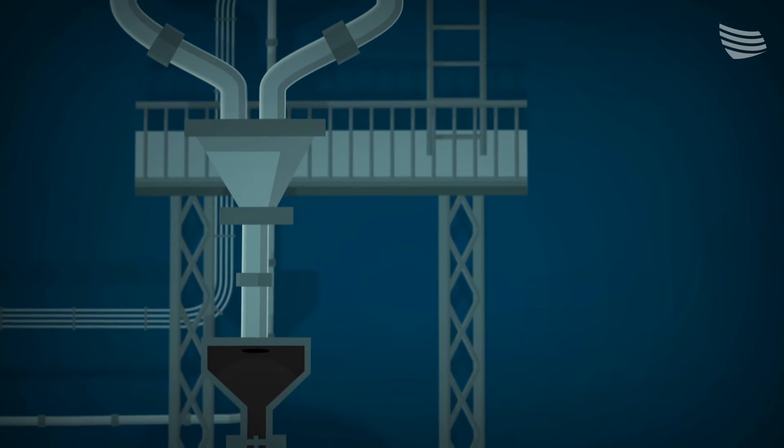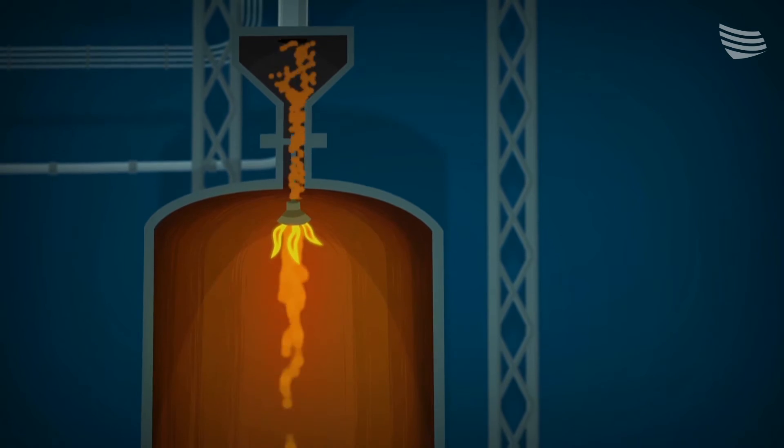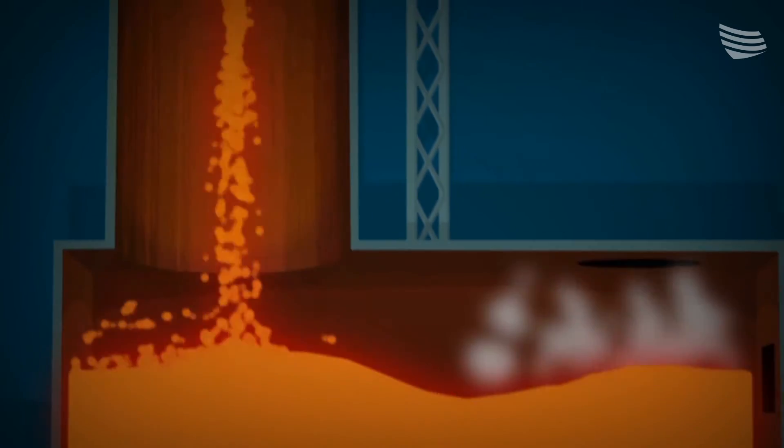In the concentrate burner inside the furnace, oxygen is blown in and the mixture melts into an incandescent rain that falls to the bottom of the furnace.